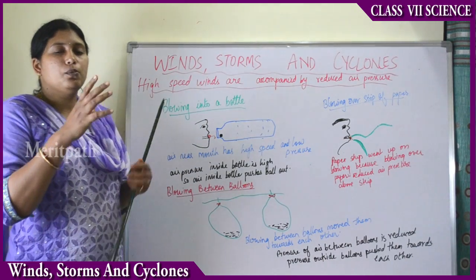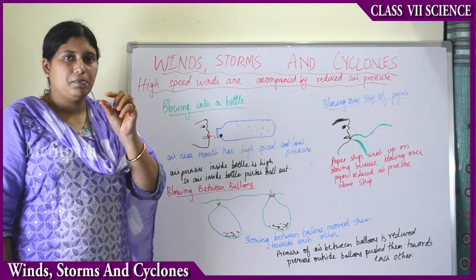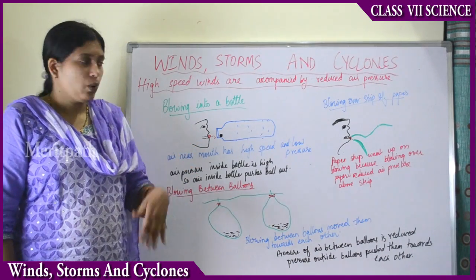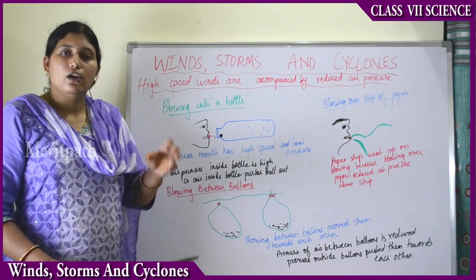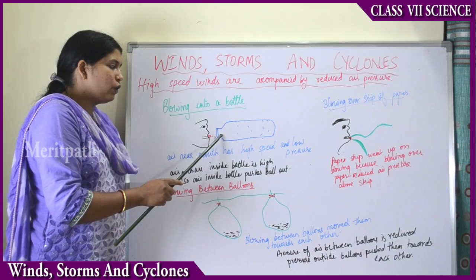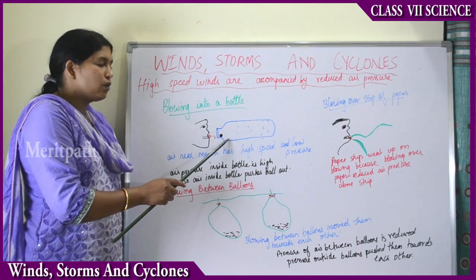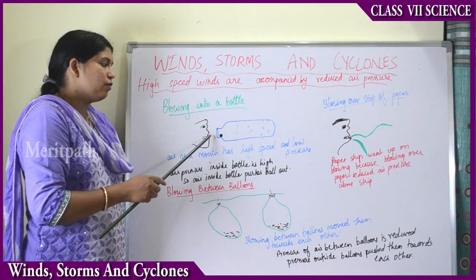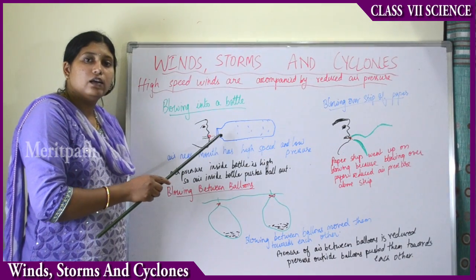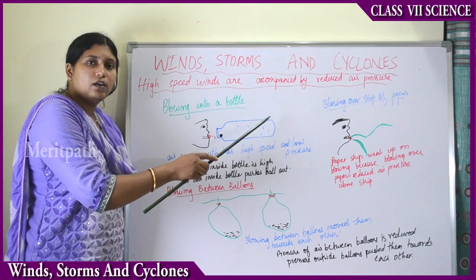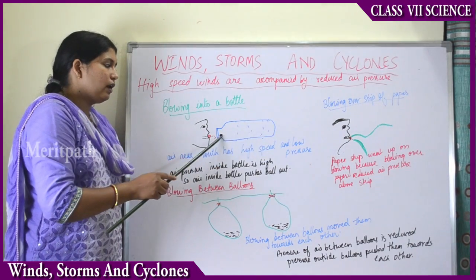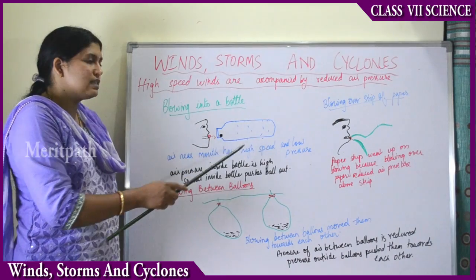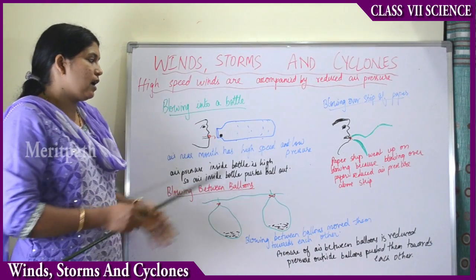When we try to blow the crumbled paper ball inside the bottle, the air from our mouth has high speed and low pressure, whereas the air inside the bottle has low speed and high pressure. Because of that high pressure inside, the ball is pushed back out and stays near the mouth of the bottle. This again shows that high-speed wind is accompanied by reduced air pressure.